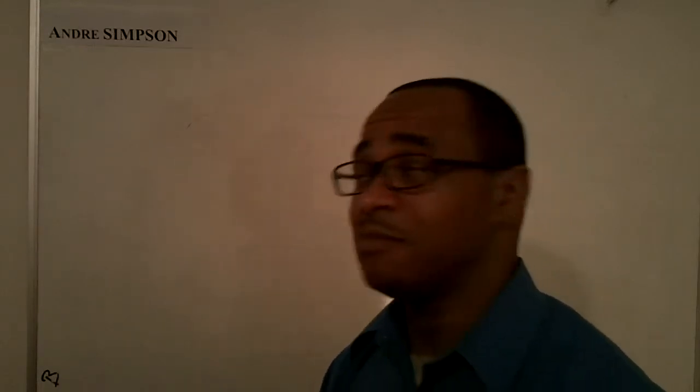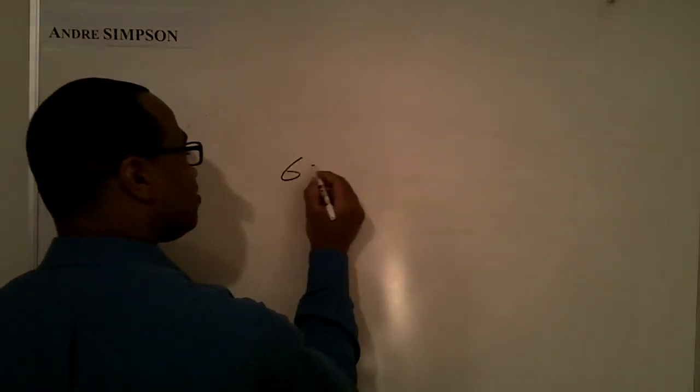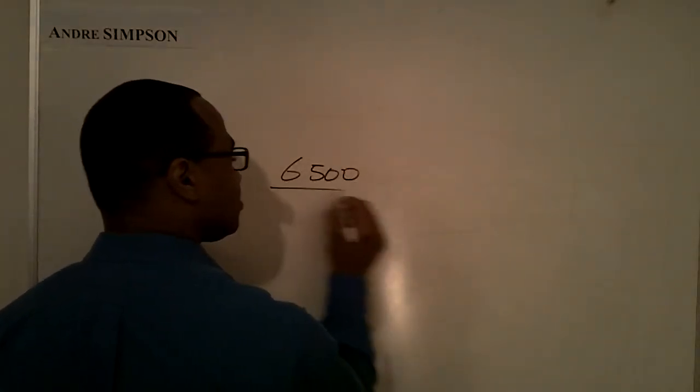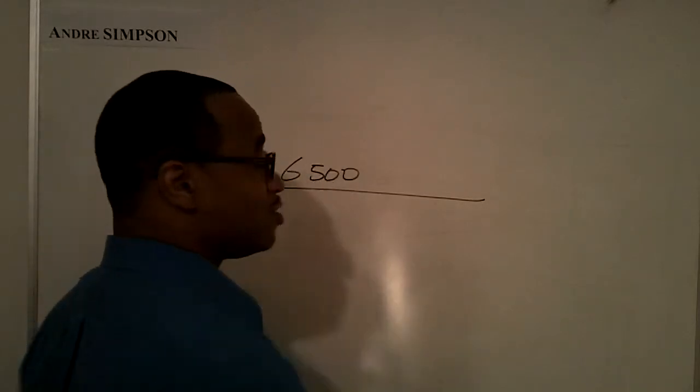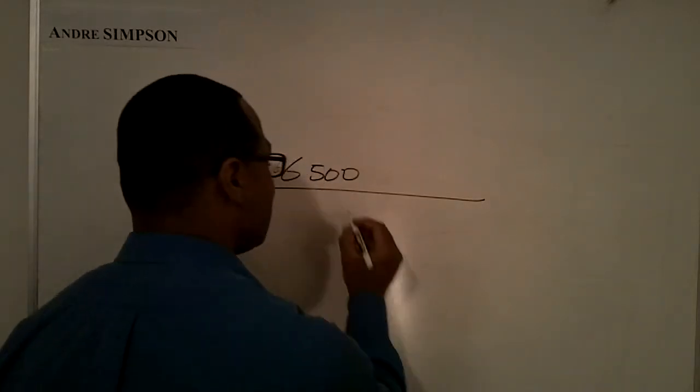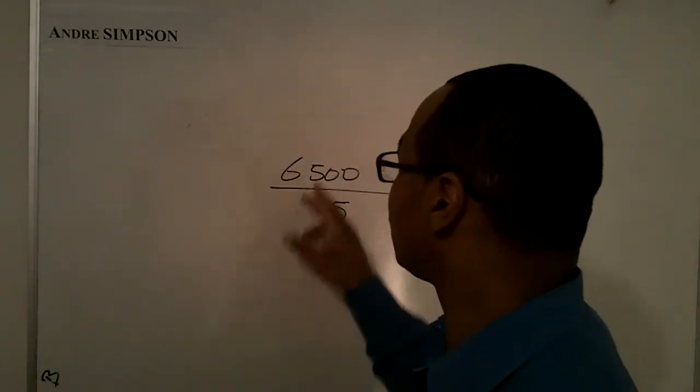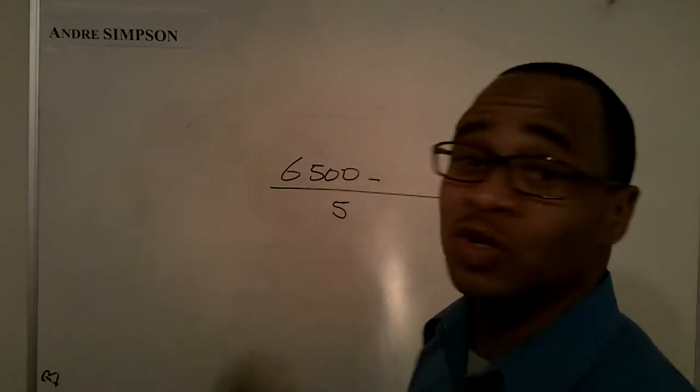What does that mean? If the value of the asset is $6,500 and the useful life is five years, that means I'm going to allocate the value of this asset over its useful life. But if you notice, I've left something missing here.